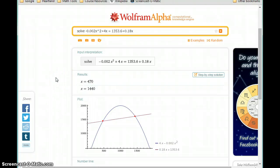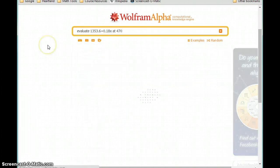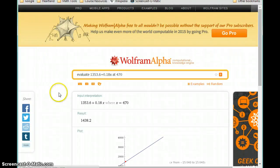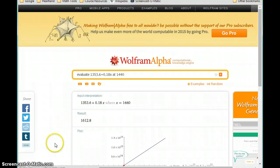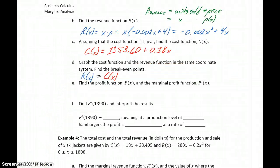So if we want to just identify the break-even points, that would be at 470 and 1440. But if we want to know those corresponding Y coordinates, then we can use either of the original equations. So we could, for instance, evaluate our cost function at 470, and we get a value of 1438.2. We could also evaluate it then at the other break-even point of 1440 to get our other resulting break-even point.